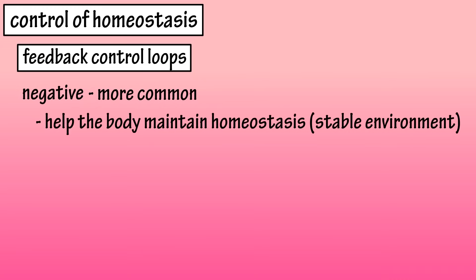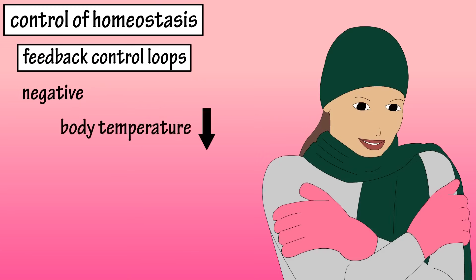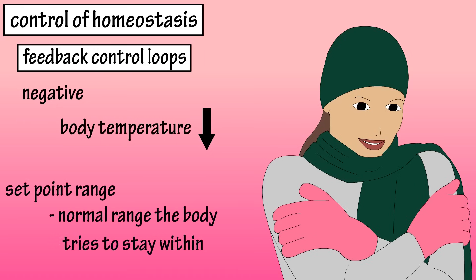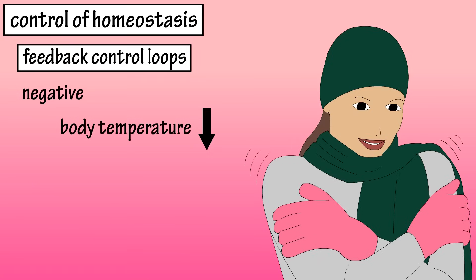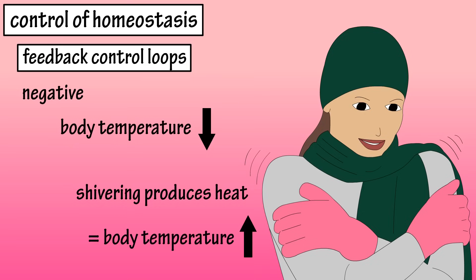An example of this is when the body temperature starts to change. When it's cold out and body temperature decreases below the set point range — which is the normal range that the body tries to stay within — the negative feedback loop will cause the body to shiver, producing heat, and ultimately body temperature will return to within the set point range.